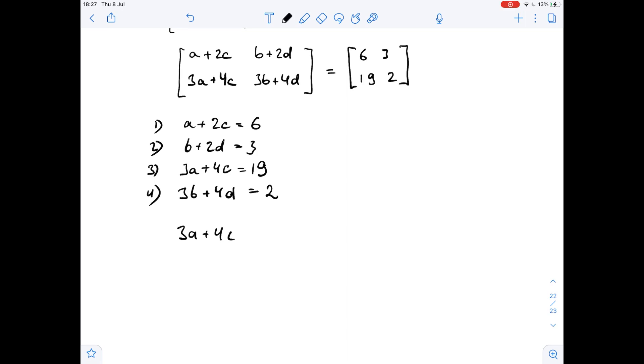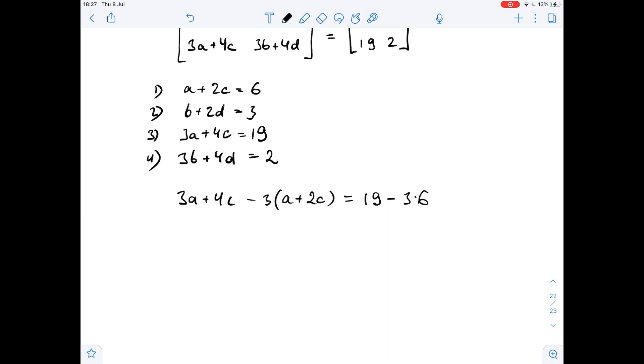So it's our third equation, 3a plus 4c, minus 3 times our first equation, a plus 2c, and here we get 19 minus 3 times 6. Let's simplify: 3a minus 3a cancels out, and 4c minus 6c is negative 2c equals 1. Then we get that c equals negative 1 over 2.